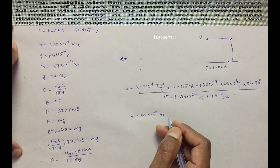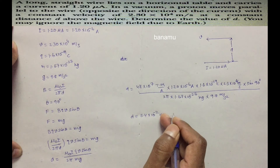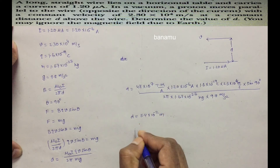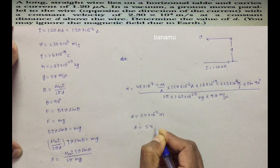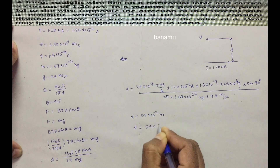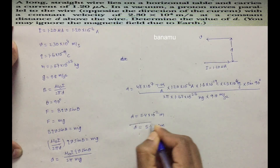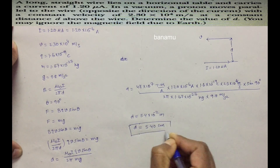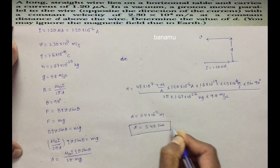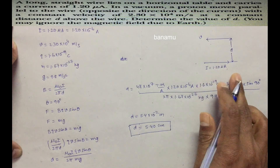Since 1 centimeter is equal to 10 to the power of minus 2 meters, the distance D is equal to 5.4 centimeters. This is the distance between the proton and the current carrying conductor.